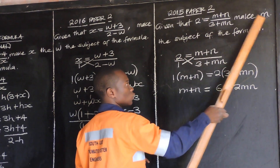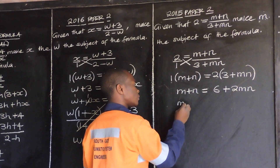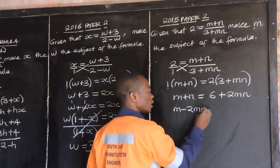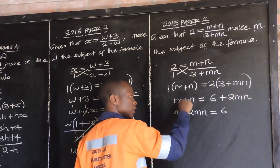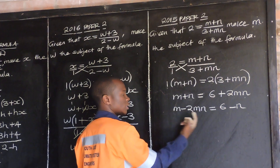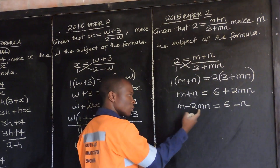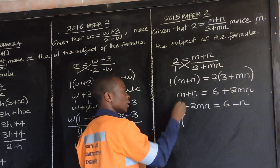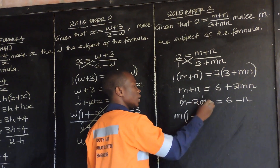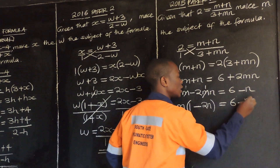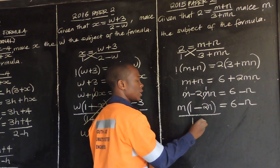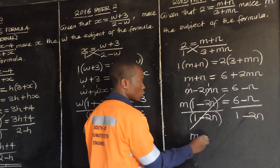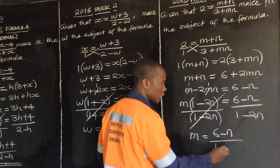Since we are making m the subject, we need to group the like terms — m terms together. So we have m, and positive 2mn, when transposed to the other side, gives minus 2mn, is equal to 6. Positive n, when transposed, becomes negative n. At this level, since we have grouped the m terms together, we factorize — factor out m since it is common. So m open brackets: 1 minus 2n is equal to 6 minus n. Divide both sides by 1 minus 2n. So m is equal to 6 minus n over 1 minus 2n.